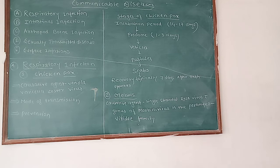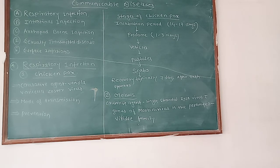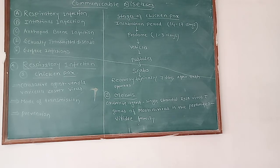Upper respiratory tract infections also include otitis, etc. Lower respiratory tract infection involves inflammation of the air passages within the lungs. When lower respiratory tract infection happens, the trachea (windpipe) and the large and small bronchial airways within the lungs become inflamed due to infection.